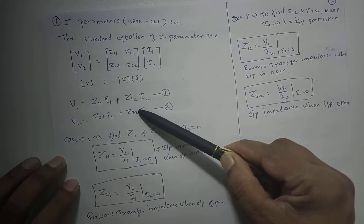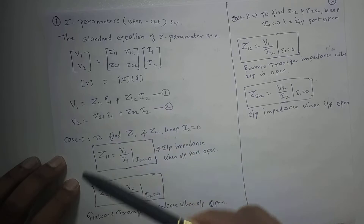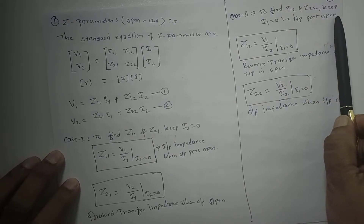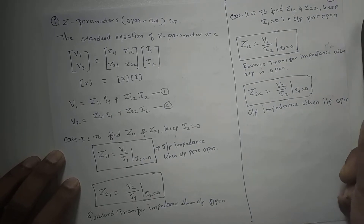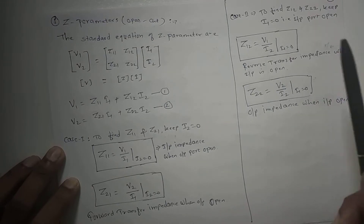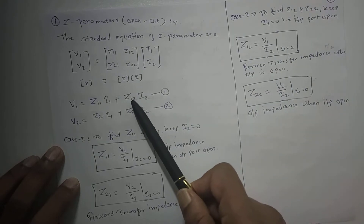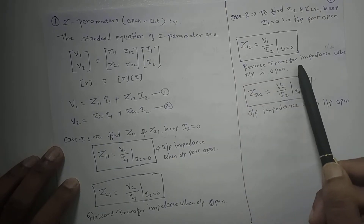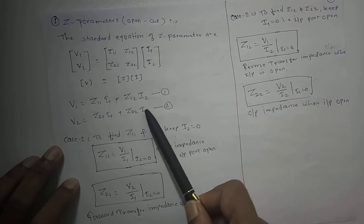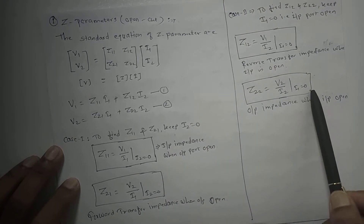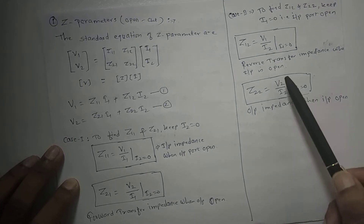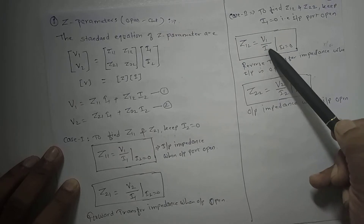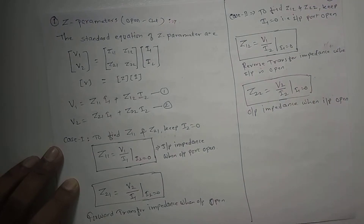To find Z12 and Z22, we keep I1 = 0, meaning the input port is open circuit. When the input port is open and we measure V1, I2, and V2, we can find Z12 and Z22. From equation 1, Z12 = V1/I2 when I1 = 0. This is called reverse transfer impedance when the input is open. Z22 = V2/I2 when I1 = 0. This is called output impedance when the input is open.